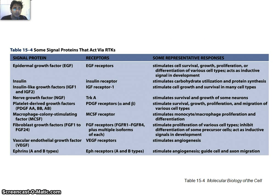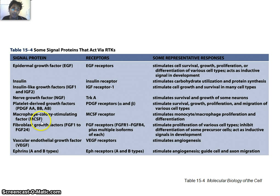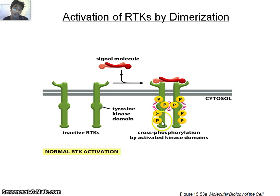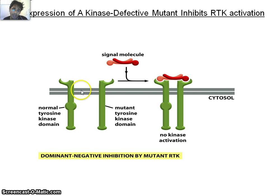Let's look at how RTKs work. For example, the M-CSF receptor: when M-CSF binds to the M-CSF receptor, the receptors dimerize and become activated. When a signal molecule binds, the two tyrosine kinase domains come closer, dimerize, and transphosphorylate each other. This phosphorylation creates several tyrosine residue sites that serve as docking sites. If the tyrosine kinase domain is mutated, the receptors will dimerize but there will be no phosphorylation and ultimately no activation of the signaling pathway.